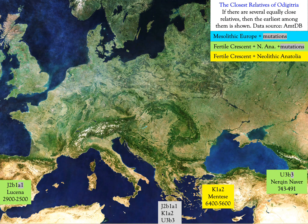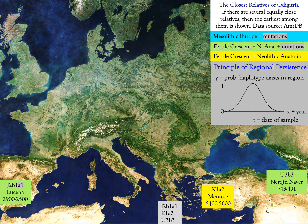We start our analysis by finding the closest relatives of the Odigitria samples in the ancient mitochondria database AMT-DB. If there are several equally close relatives, then the earliest of them is shown. Ideally, the closest relative in the database is from an earlier time. However, we also allow the closest relatives to be from a later time — like the U3B3 sample from Nerquin-Navar, Armenia, which comes from the Iron Age. Here we use the principle of regional persistence, which means that if some haplogroup is found in a region, then there is a probability that it could be found there earlier. Of course, this probability declines the further we go back in time.